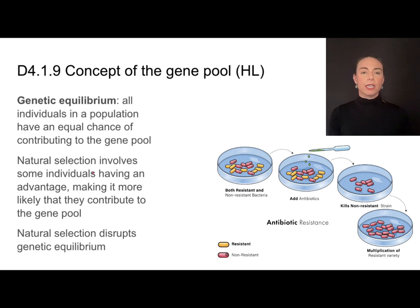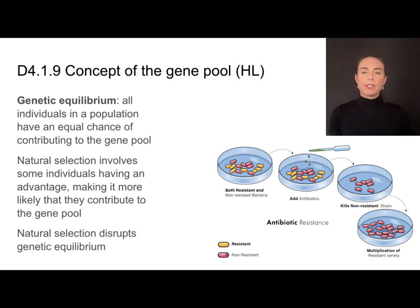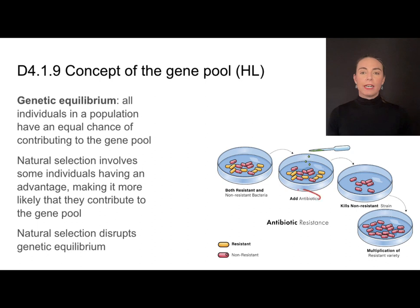The reason is that natural selection involves individuals having an advantage. In genetic equilibrium it's an equal chance, but natural selection gives individuals an advantage, making it more likely for them to contribute to the gene pool. For instance, with antibiotic resistance: without the antibiotic, all individuals have an equal chance of surviving, reproducing, and contributing to the gene pool, so the proportions of resistant and non-resistant bacteria remain the same. Once there is a selective pressure — in this case, the antibiotics — some individuals will have an advantage over others and reproduce more often, which changes the gene pool.